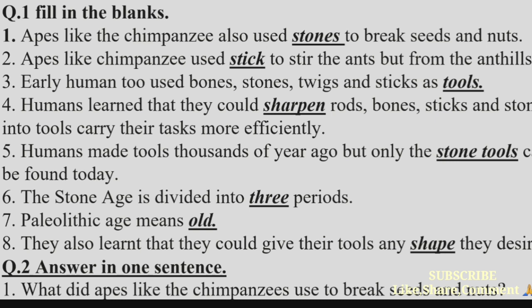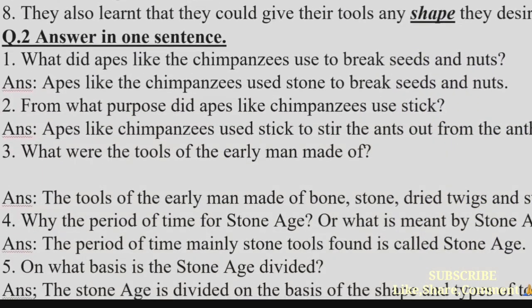(6) The Stone Age is divided into — periods. Answer: three. (7) Paleolithic age means — . Answer: old. (8) They also learned that they could give their tools any — they desired. Answer: shape.